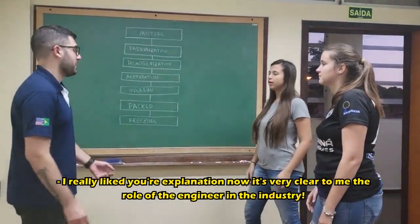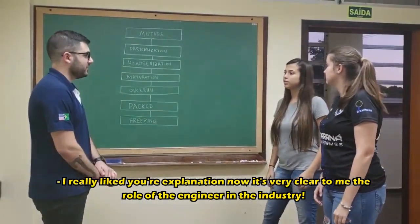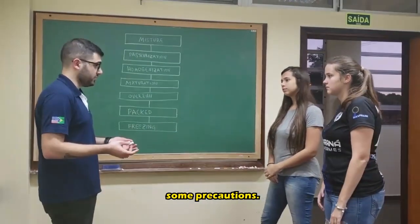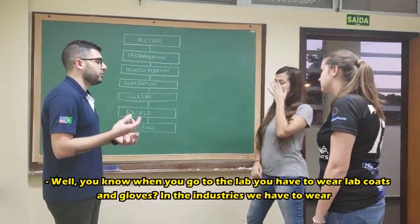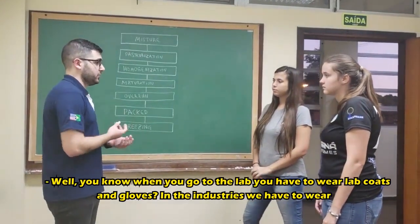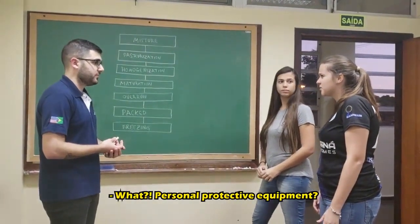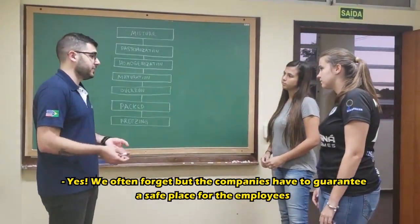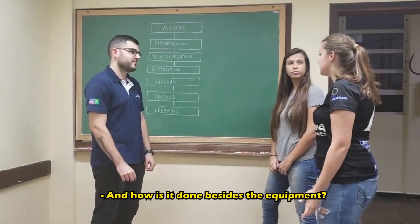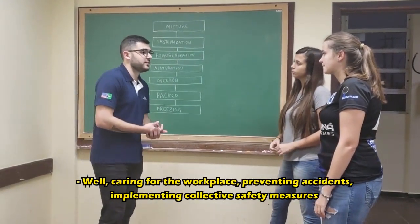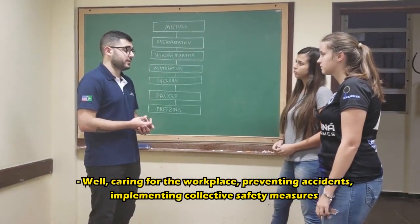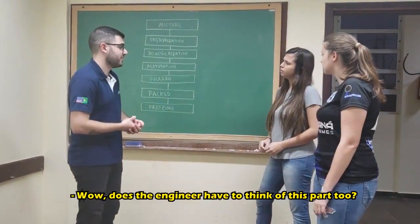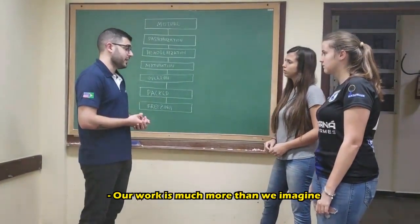I really liked your explanation — it makes clear the role of an engineer in the industry. Yeah, but there's one more thing. Since we're talking about industries with several processes and food, we need to take some precautions. Like what? Well, you know, when we go to the lab, you have to wear lab coats and gloves. In industry, we have to wear personal protective equipment. Yeah, we often forget, but companies have to guarantee a safe place for employees. And how is it done besides the equipment? Well, caring for the workplace, preventing accidents, implementing collective safety measures, and training employees. Wow! Does the engineer have to think of this part too? Our work is much more than we imagine.